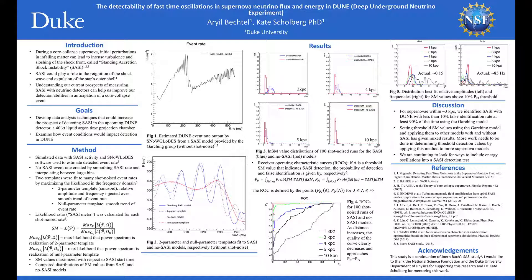A simulated supernova model with SASI activity was input into Snowglobe software to estimate the event rate that would be detected in DUNE. From this rate, we created a smooth reference model that didn't contain SASI.